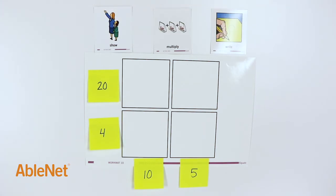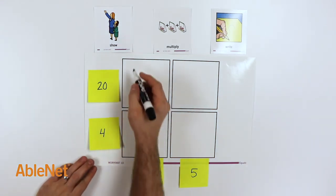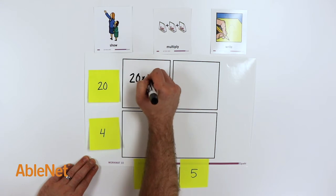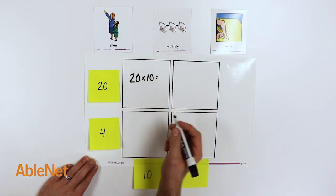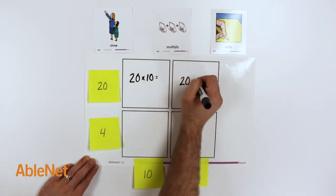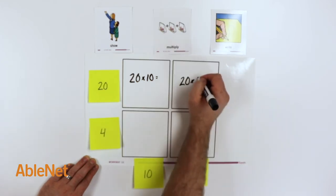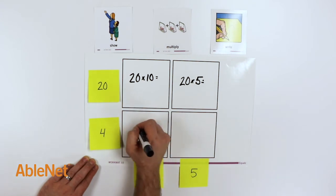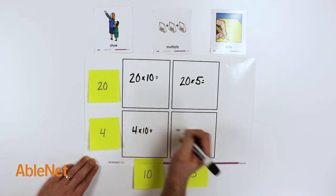We can start by writing the equations in each square. 20 times 10 will go in the first square. Next 20 times 5. At the bottom we have 4 times 10 and 4 times 5.